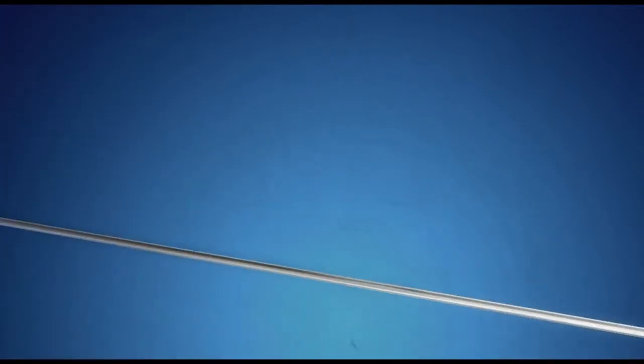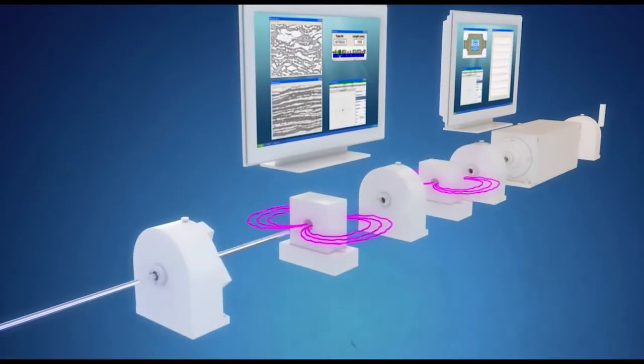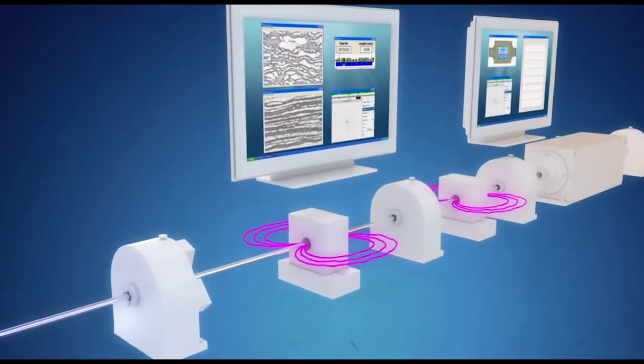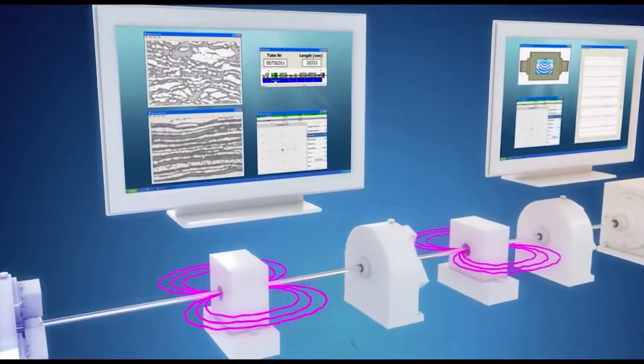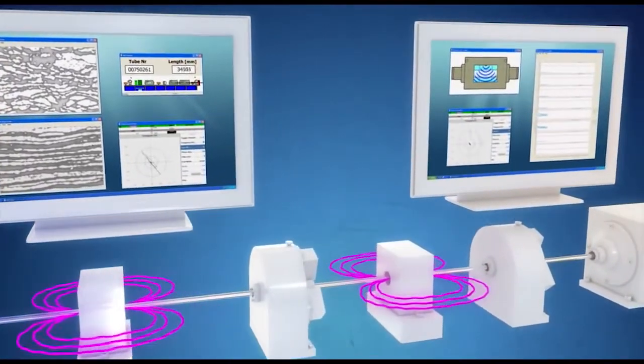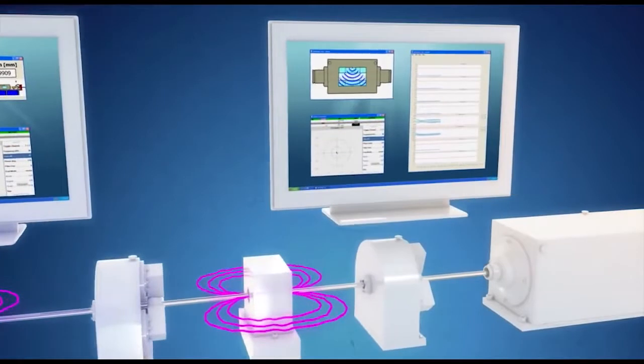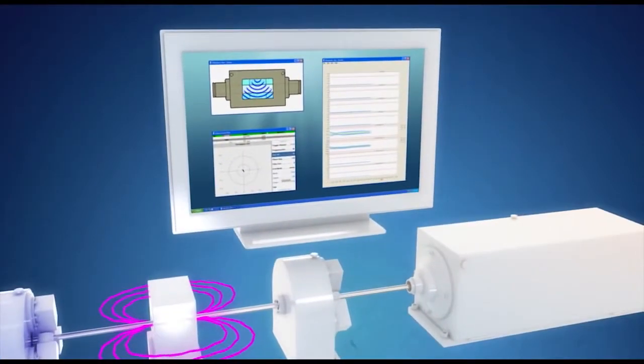According to customer requirements, the tubes are fully inspected for defects using ultrasonic and eddy current testing methods set to detect the tiniest defects such as cracks, cavities or other material defects that the naked eye can't detect.